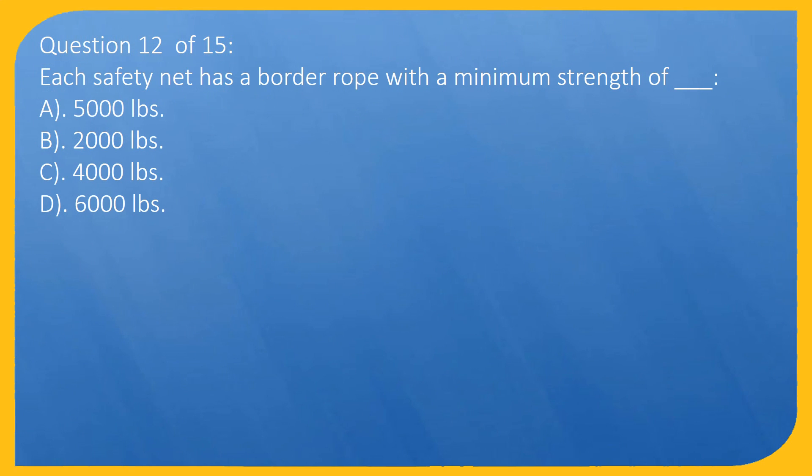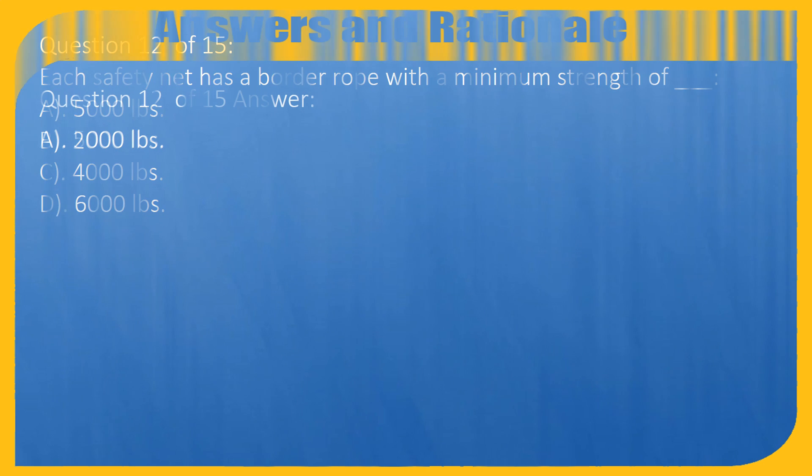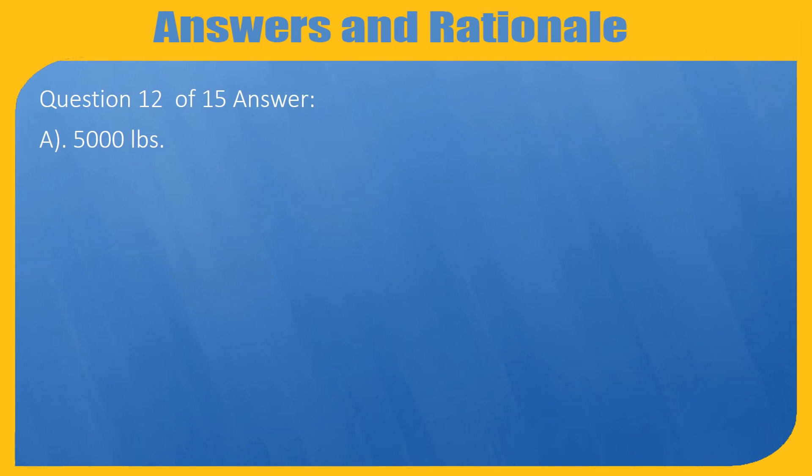Question 12 of 15: Each safety net has a border rope with the minimum strength of: A) 5,000 pounds, B) 2,000 pounds, C) 4,000 pounds, D) 6,000 pounds. Answer: A, 5,000 pounds.